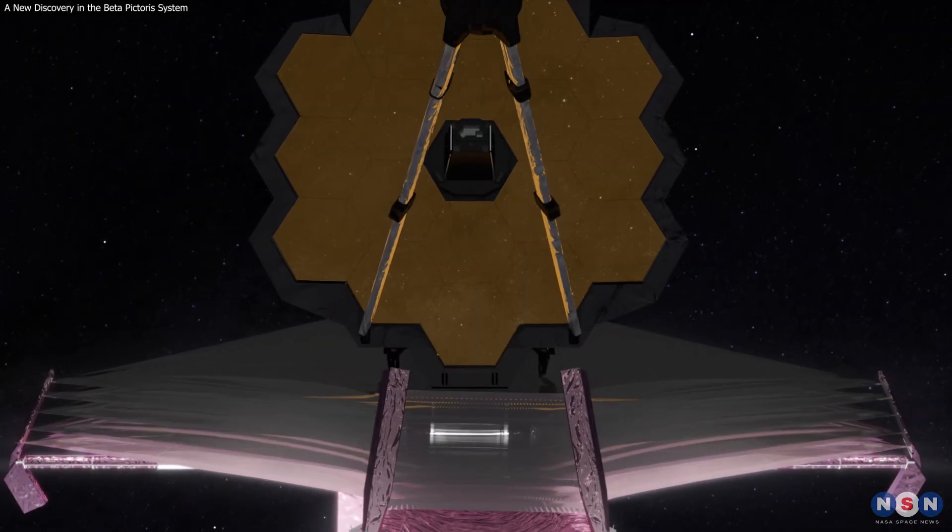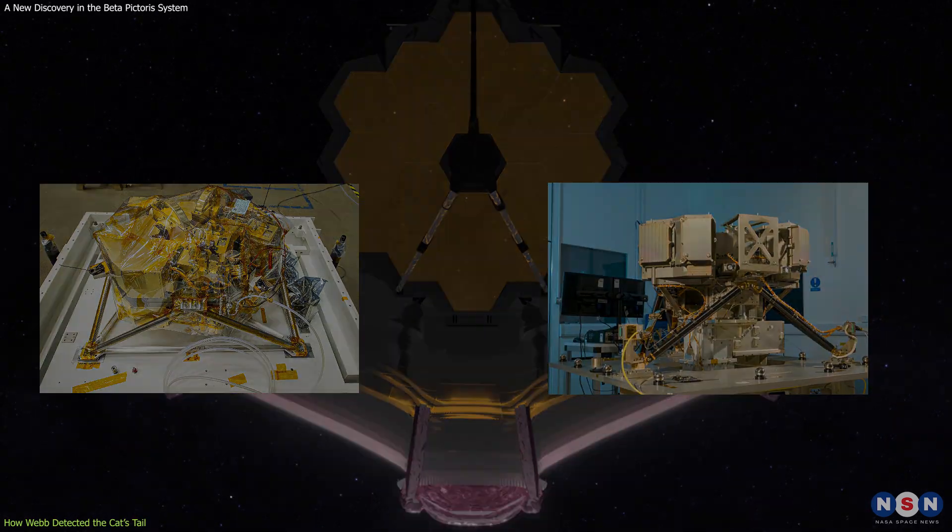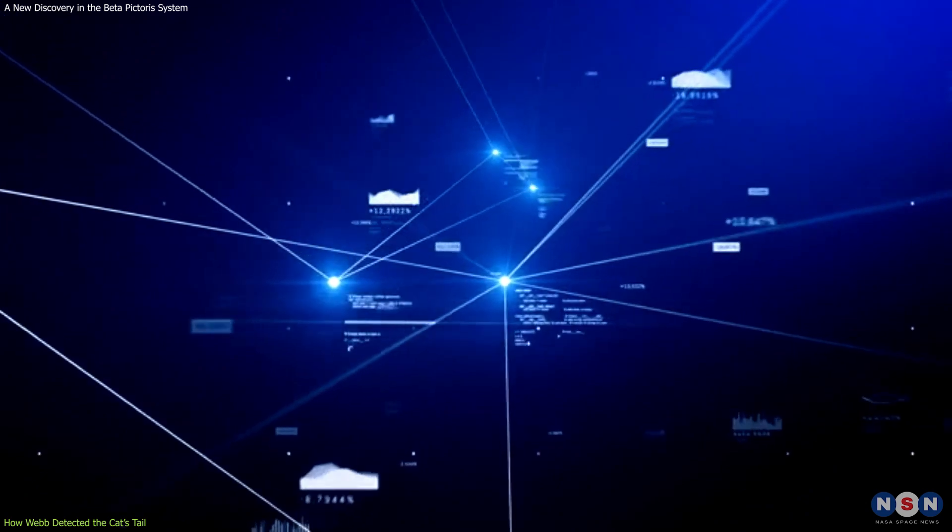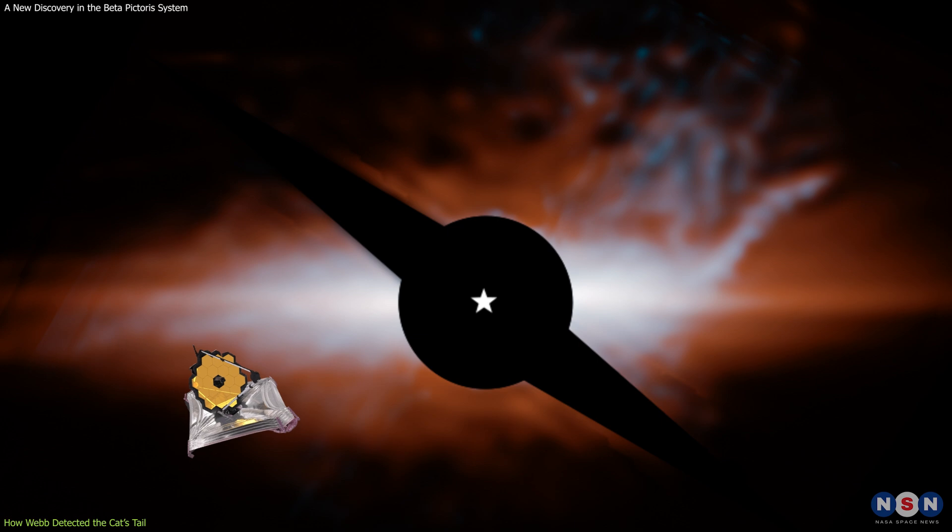To investigate the Beta Pictoris system, Webb used two of its instruments, NIRCAM and MIRI. And by combining the data from both instruments, Webb was able to detect the cat's tail, which is otherwise invisible to other telescopes.